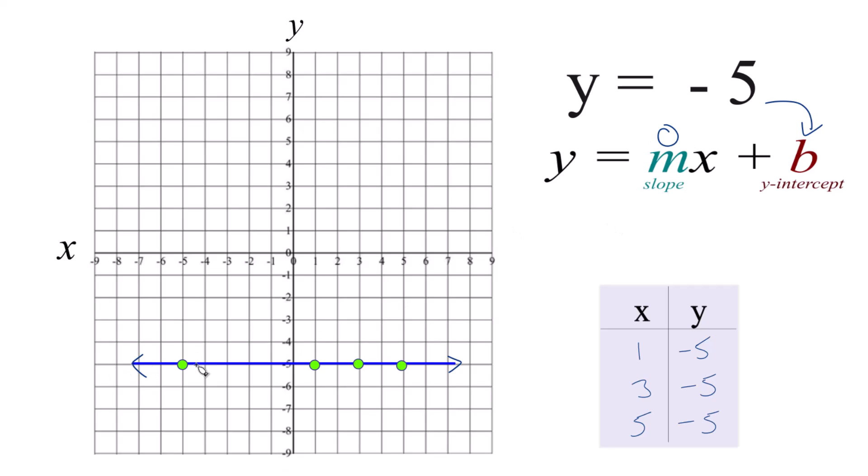So no slope, that's a straight line. And the y-intercept right here, where we cross the y-axis, that's negative 5.